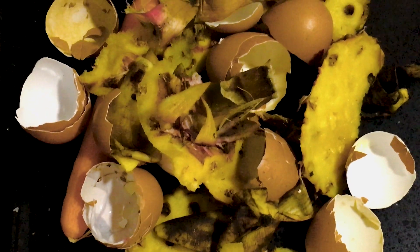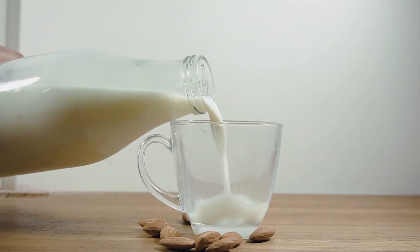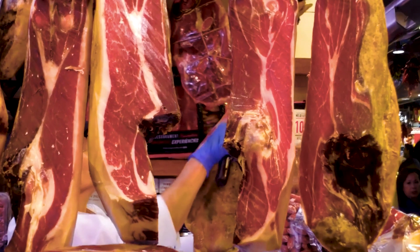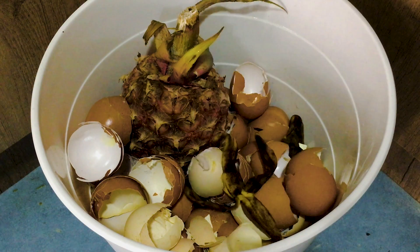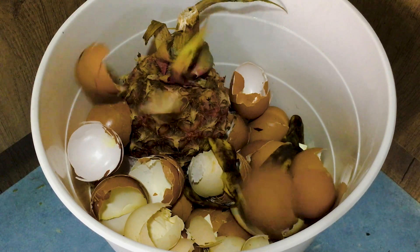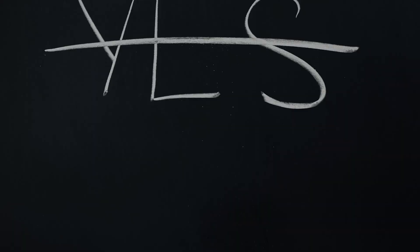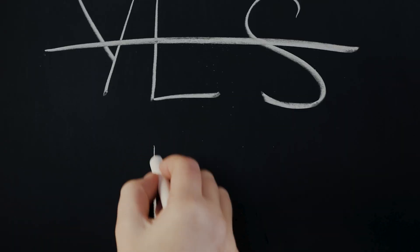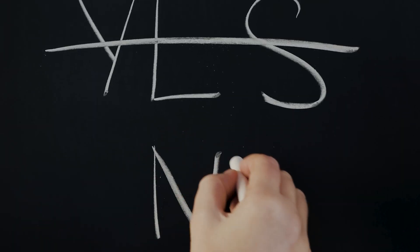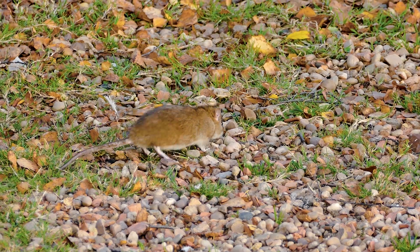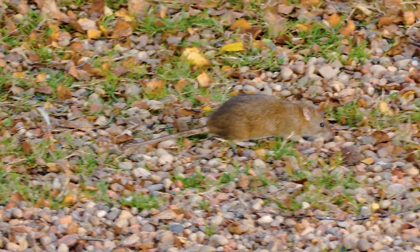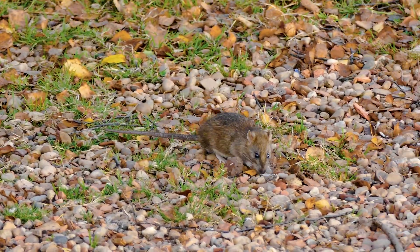Green matter, dairy products, meat, or other protein resources from the kitchen can be used as nitrogen sources. Although, it is not recommended to use meat and dairy products, as it may create a foul smell and attract rodents and flies.